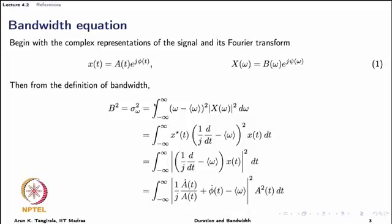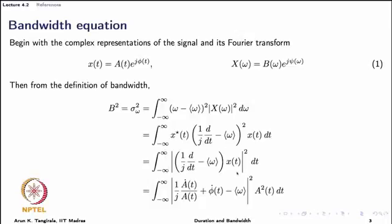Our objective is to derive the expression for the bandwidth. Using these representations and the definition of bandwidth — along with the simple trick covered in the bandwidth definition slide — we can rewrite the bandwidth integral in terms of the signal in time itself, where (d/dt) now acts as an operator on x(t). We can then rewrite the product of x*(t) and the operator (1/j)(d/dt) minus the average frequency, applied to x(t), as a modular square. The integrand is the modular square of the quantity [(1/j)(d/dt) − ⟨ω⟩] x(t).